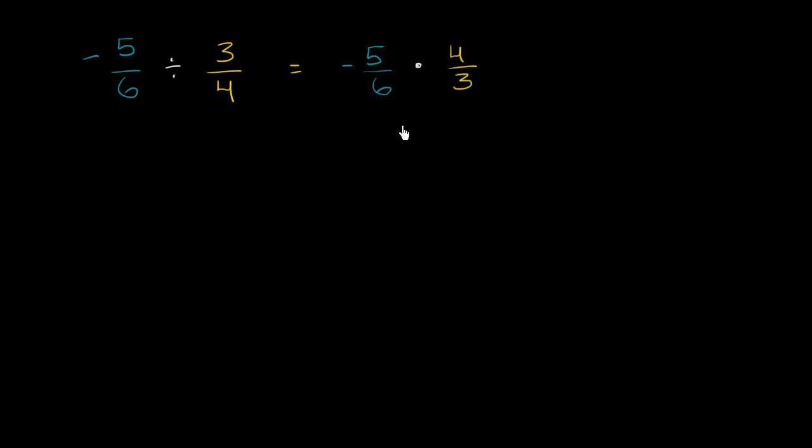And we've already seen lots of examples multiplying fractions. This is going to be the numerators times each other. So we're going to multiply negative 5 times 4. I'll give the negative sign to the 5 there. So negative 5 times 4. Let me do 4 in that yellow color. And then the denominator is 6 times 3.